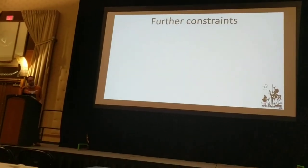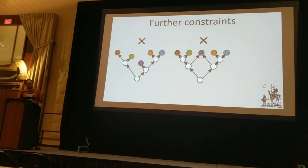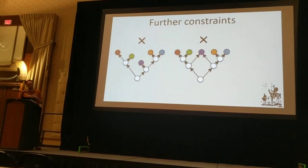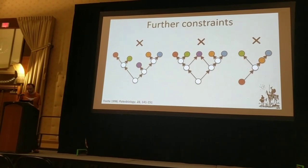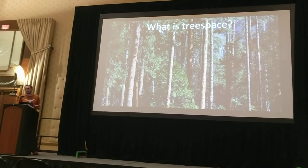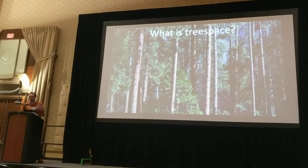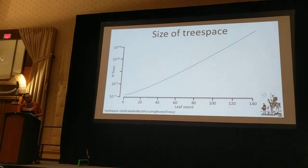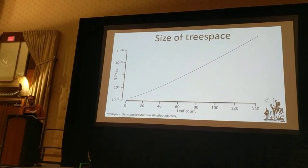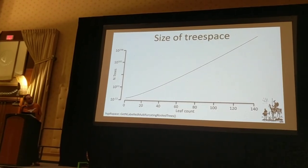I'm applying some further constraints: I'm going to ignore branch lengths and only deal with topology. I'm not going to allow reticulation. And I'm also not going to allow trees where we have sampled ancestors in our data set. So what is tree space? It's simply the space of all possible trees. The major difficulty in doing anything with tree space is its sheer size — here's the standard graph showing how the number of possible trees increases with the number of tips.